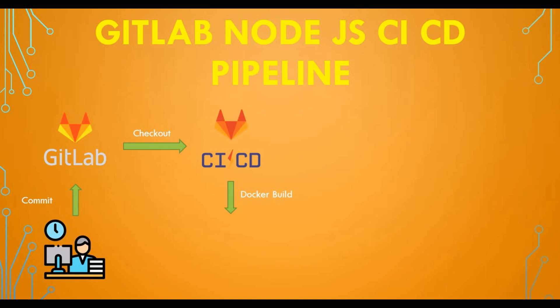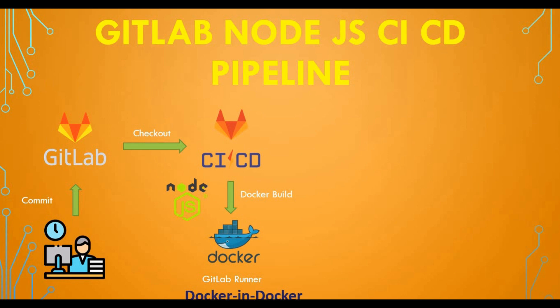As we already saw in the previous tutorial, we'll build our image using the docker build command using a GitLab runner. It's a Node.js application and we are going to use the Docker-in-Docker concept, which we already discussed, to build your image and push it into the GitLab container registry.